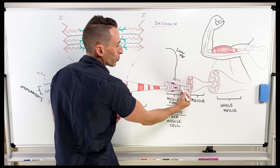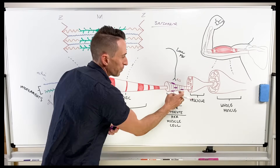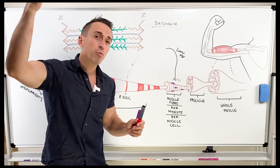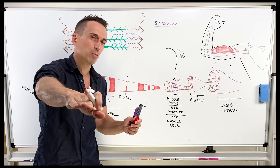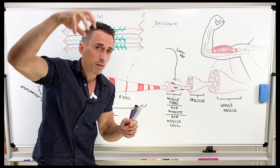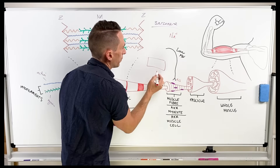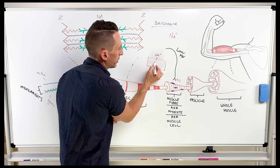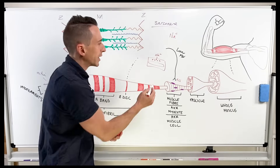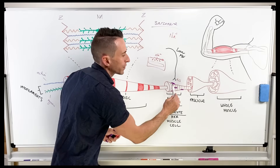Acetylcholine will bind to acetylcholine receptors on that muscle fibre. The sarcolemma — recall that's the plasma membrane of the muscle fibre. Once acetylcholine binds to acetylcholine receptors, it opens up sodium channels and sodium rushes in. Remember action potentials: sodium rushes in, bringing its positive charge with it, because sodium has a positive charge. When you've got sodium rushing inside, it takes that positive charge with it and it depolarizes the membrane — specifically it depolarizes the sarcolemma right here.